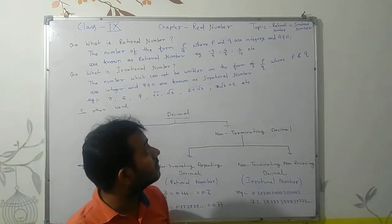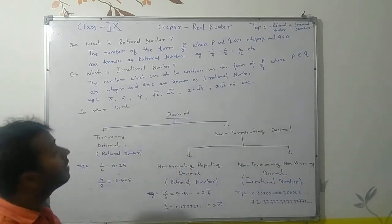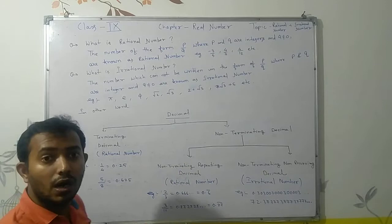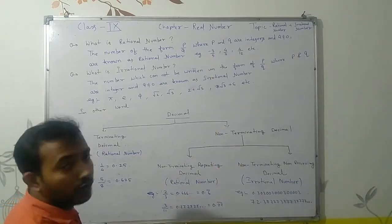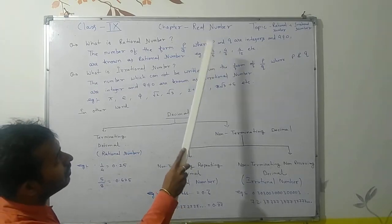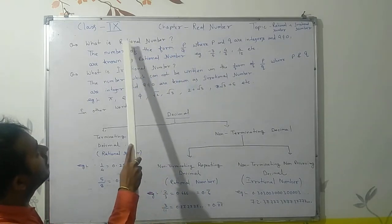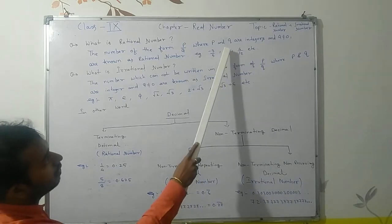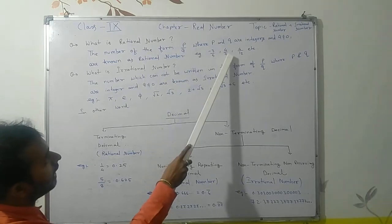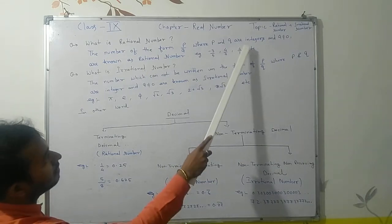Our next topic is rational and irrational numbers. A rational number is a number of the form p by q, where p and q are integers and q should not be equal to 0. For example, -3/5: both are integers and written in the form p by q, so it is a rational number. Similarly, 4/7 — 4 and 7 are both integers, 7 is not equal to 0, so it is a rational number.